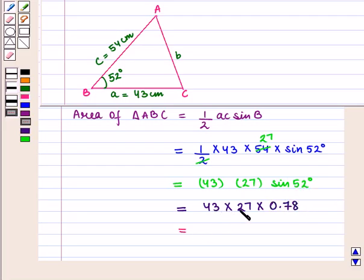So this is equal to 43 × 27 that is 1161 × 0.78 which is approximately equal to 905.58.